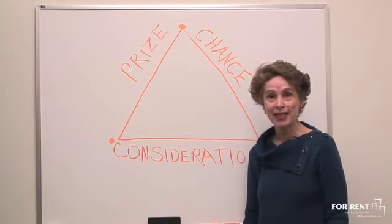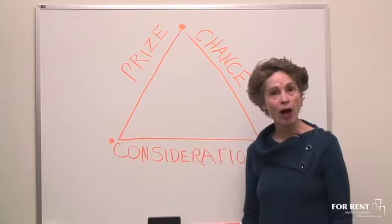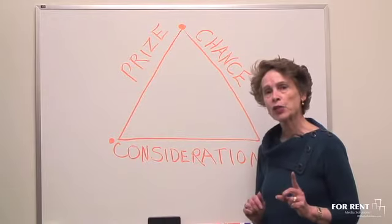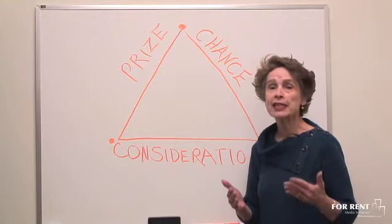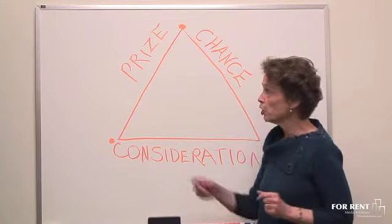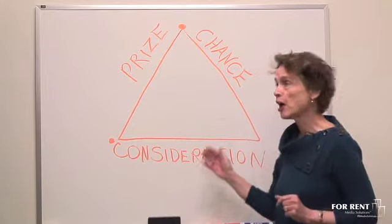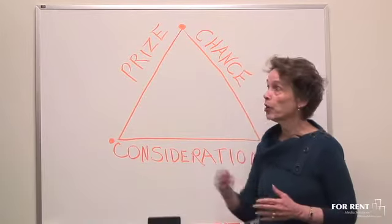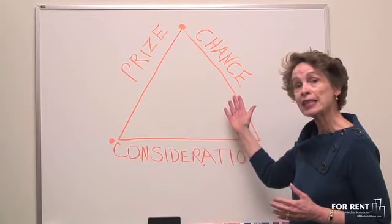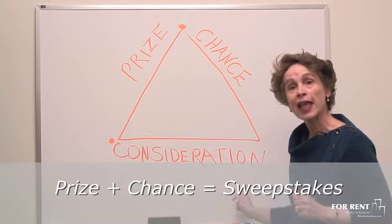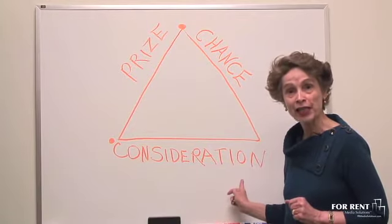Now let's take a look at what makes up a sweepstakes. What two sides of the triangle do we use? In this case, you use the prize — the whole reason they're going to enter — but this time you do not want them to give you any consideration. They're not really going to provide you with anything, except perhaps registering online or going to a website and doing something very quickly. That means you have a prize, no consideration, so now you can have chance. The sweepstakes is what we traditionally refer to as a drawing — when you offer a prize and ask people to take a chance on winning, as long as they really aren't having to do much of anything to participate.